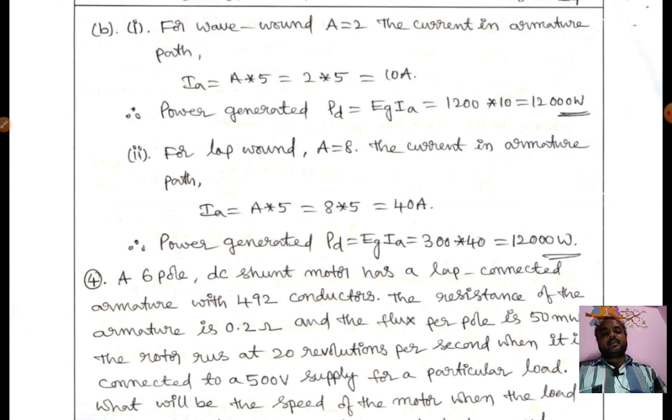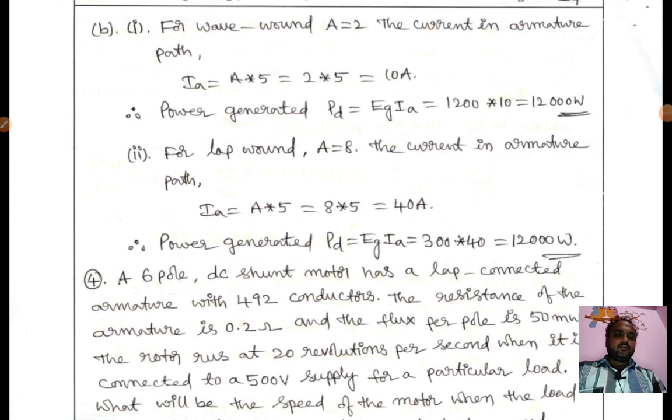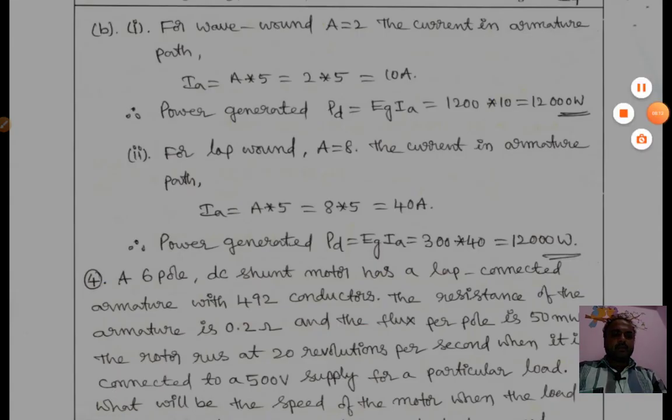From this problem we can see that wave wound is used for low current and high voltage applications. Lap wound windings we can use for high current and low voltage applications. Thank you. We'll see some more problems in another video. Thank you everyone.